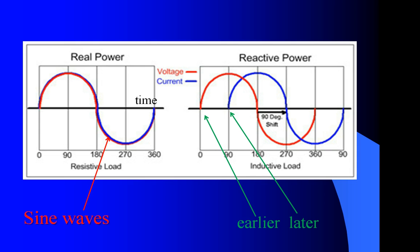If we examine the sine waves of real power and reactive power, or resistive and inductive loads respectively, we can see that on the left hand side, in the case of the real power, the voltage and the current are in phase. Whereas on the right hand side, we see that the current is lagging behind the voltage, here shown by an angle of 90 degrees.